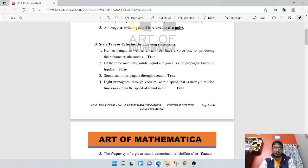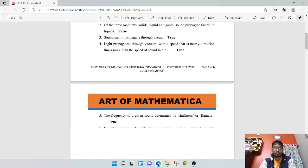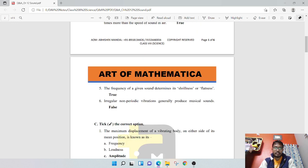One of the three medium solid, liquid, and gases, sound propagates faster in liquid - that is false. Sound cannot propagate through vacuum - that is true. Sound does not propagate in vacuum. Light propagates through vacuum with a speed that is nearly a million times more than the speed of sound in air - that is also true.